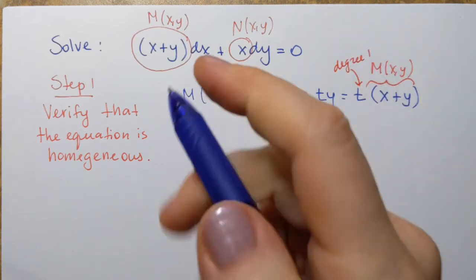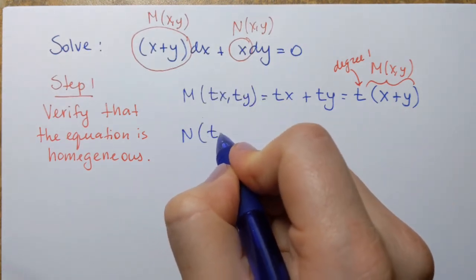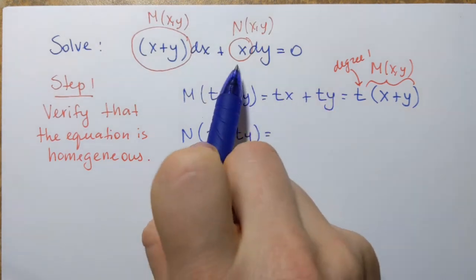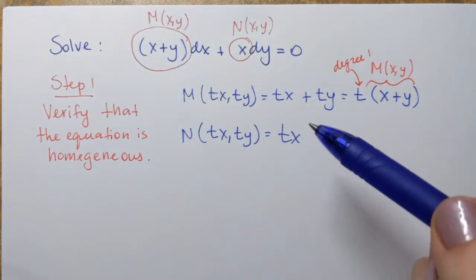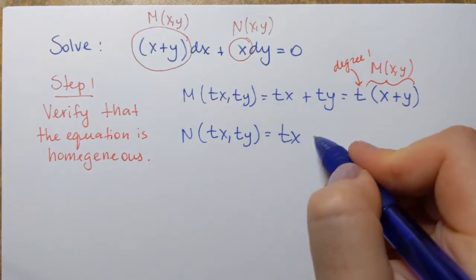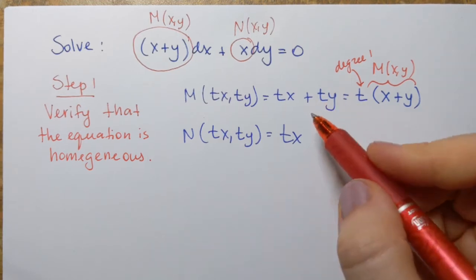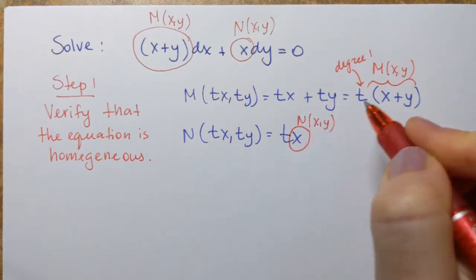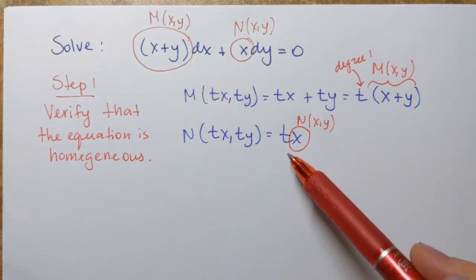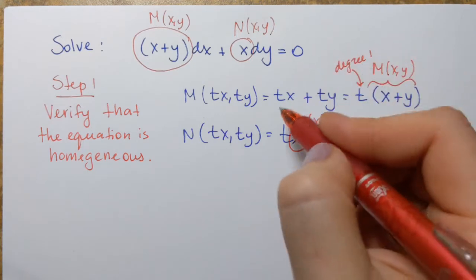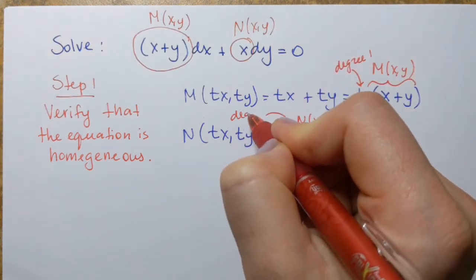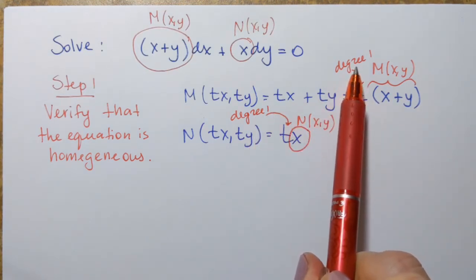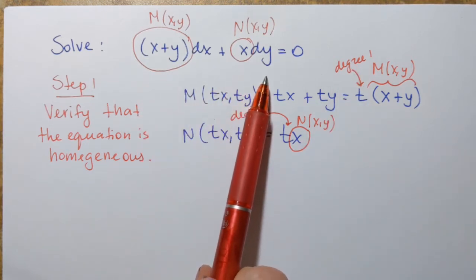Now let's check N of x,y. We look at N of tx, ty. Plugging in tx for x — and since we only have that variable in N, there's no place to plug in ty. Right away I can see that this equals tx, which is t times the original function N of x,y. So it confirms that the function is homogeneous and the degree of homogeneity is 1 because of the power of t. Now we see that both are homogeneous and have the same degree, so we conclude that yes, this is a homogeneous first-order differential equation.